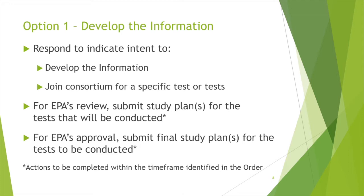Under Option 1 — develop the information — the order recipient must submit an initial response indicating whether they have joined a consortium for a specific test or tests. The first required step is to submit an initial study plan for each test for EPA's review. The study plan will detail how the recipient will execute the required test or tests in accordance with the standardized testing guidelines provided by EPA in the order. Following EPA's feedback, the recipient must submit a final study plan that addresses EPA's feedback for each test. Deadlines for submitting initial and final study reports will vary depending on the test protocol and will be stated in the orders.